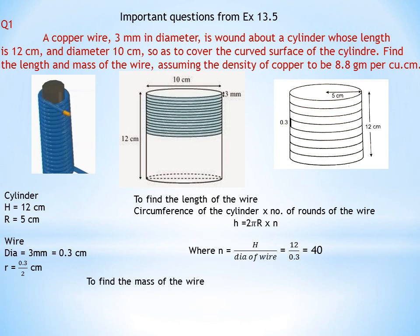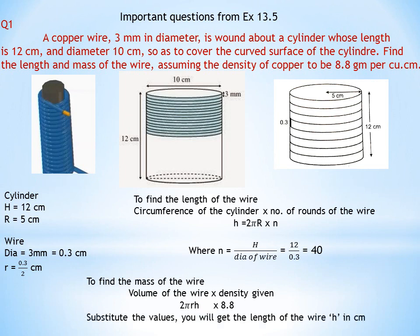To find the mass of the wire: mass = volume of wire × density. The wire is itself a cylinder, so volume = π·r²·l, where r is the radius of the wire (0.15 cm) and l is the length of the wire. Multiply by density 8.8 g/cm³ to get mass in grams. The length of the wire is in centimetres.